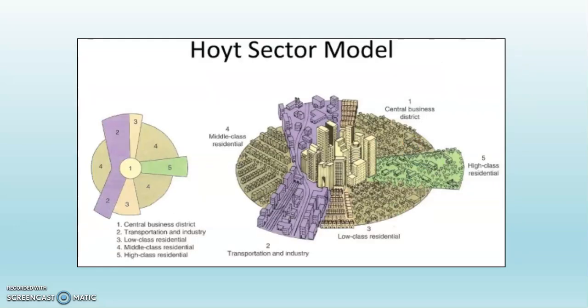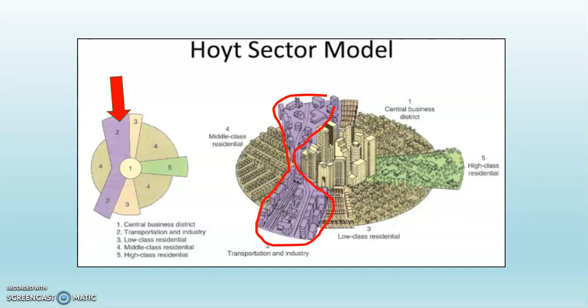Take a look again at the Hoyt Sector Model and notice that the CBD remains as it was in the concentric zone model — in the middle and circular. But the addition of the transportation corridor elongates the industrial areas along the transportation route. You can see that where I've highlighted it — I circled it on the diagram on the right-hand side and have the red arrow pointing at it on the diagram on the left-hand side. This elongated transportation route elongates the industrial areas that, in the concentric zone model, had surrounded the CBD — that was zone number two.